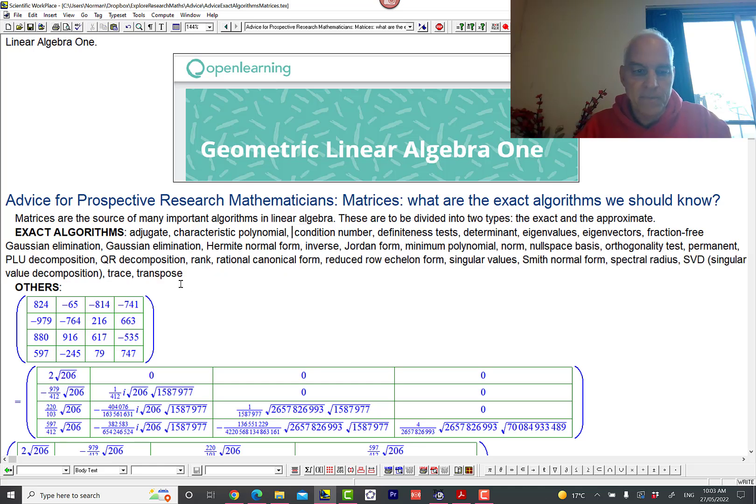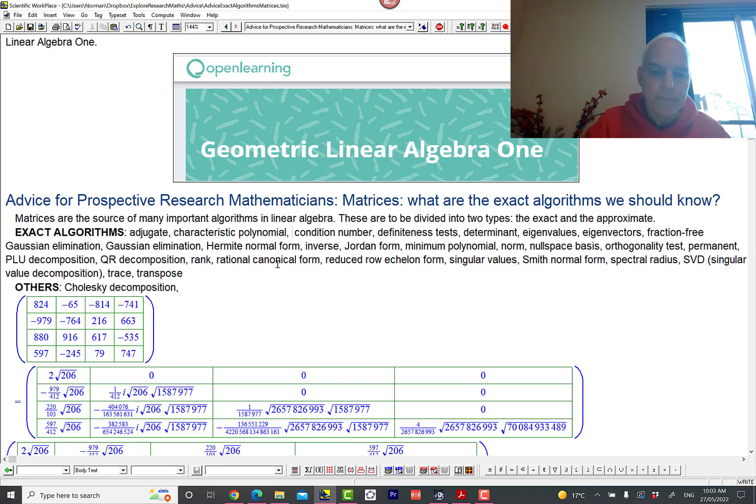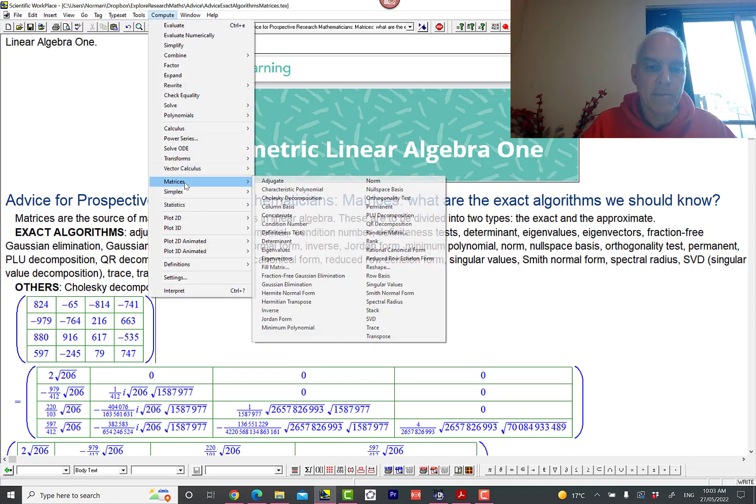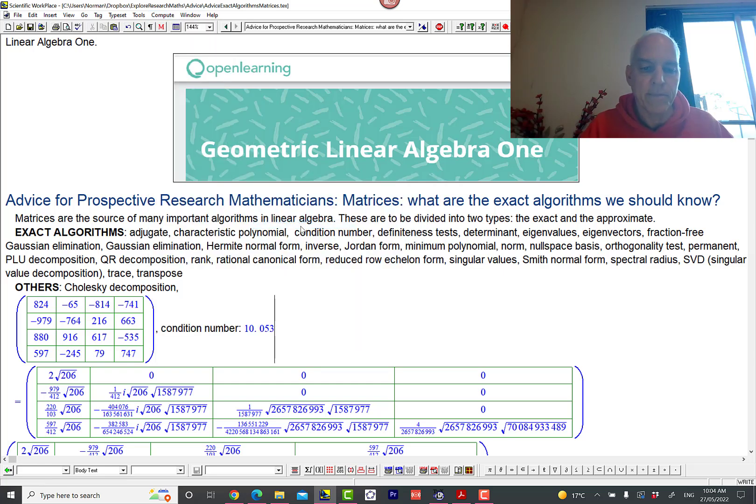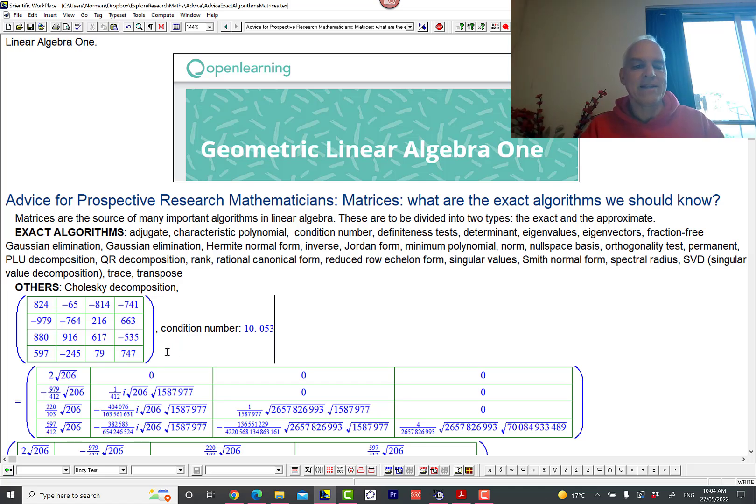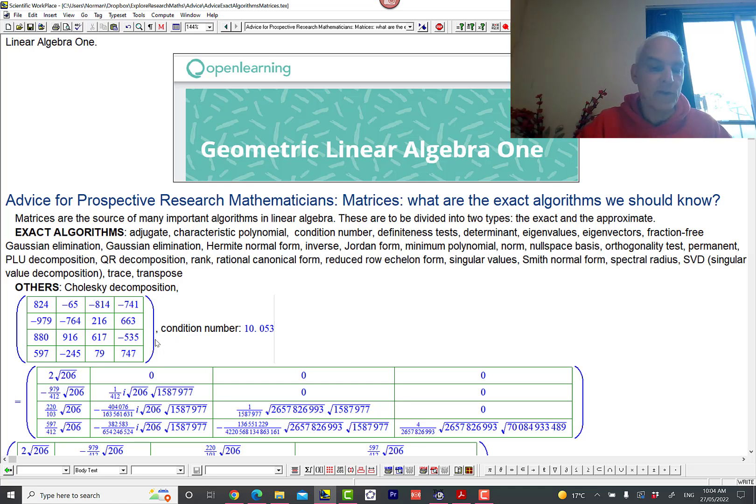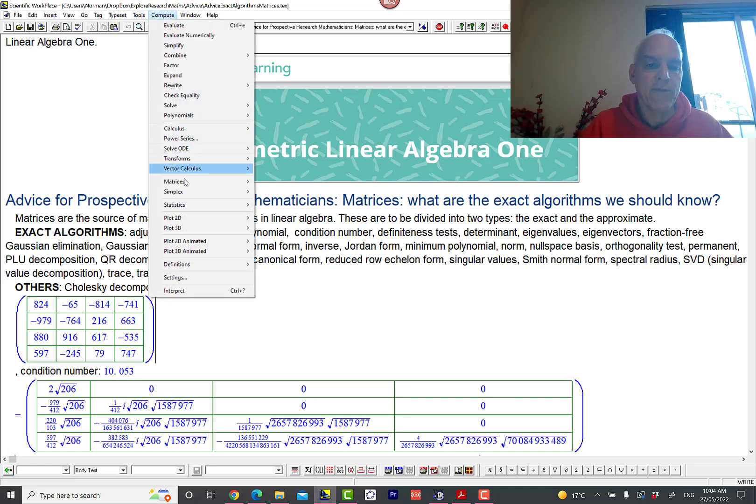The Cholesky decomposition will have to be moved, so let's move that to others. Next on the list is the condition number. That's a decimal number. It's given to five places here but that's just because of the resolution that I've set for Scientific Workplace. That's in general a decimal number so it's only approximate.